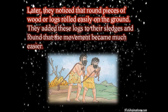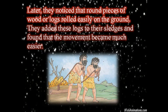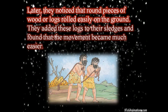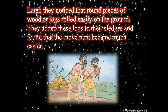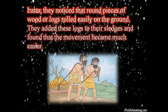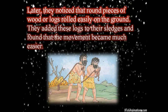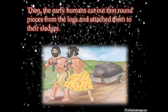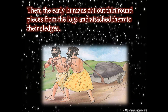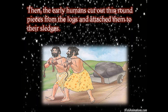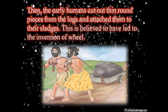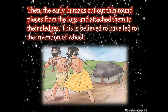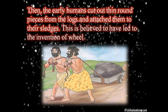They cut the log into small pieces and then attached them to the sledge, so it became easy for them to take things in it. Then the early humans cut out thin round pieces from the logs and attached them to their sledges. This is believed to have led to the invention of the wheel. Early humans started cutting thin round pieces from the log and attaching them to their sledges, and this led to the invention of the wheel.